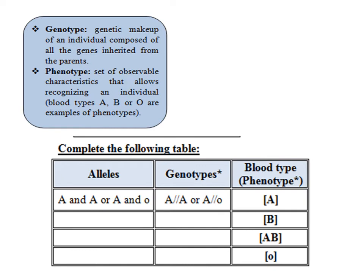Now, complete the following table. For example, if the individual possesses two alleles — A and A, or allele A which is dominant and allele O which is recessive — then we can write the genotypes as A-A (capital A, capital A) or A-O. Then the blood type, or the phenotype, which is a hidden characteristic or hidden trait, is blood group A.